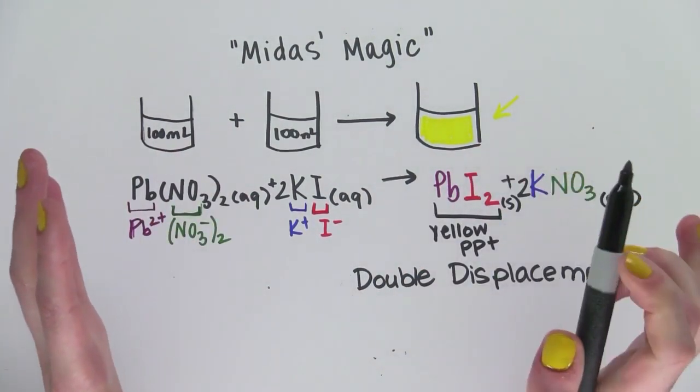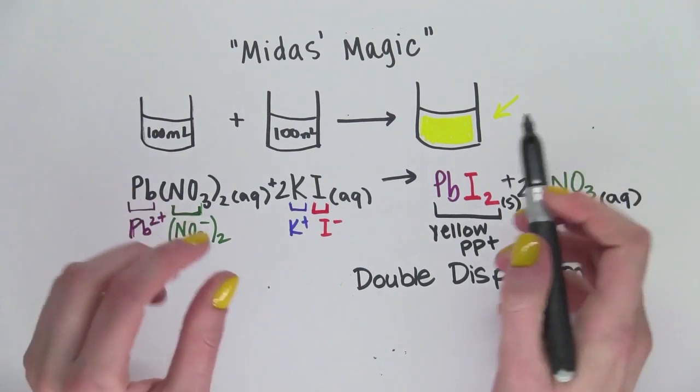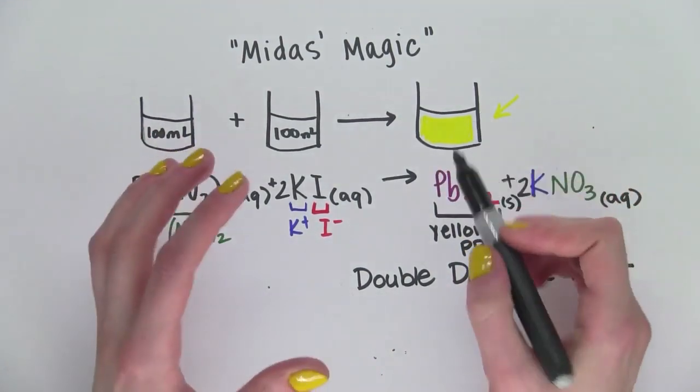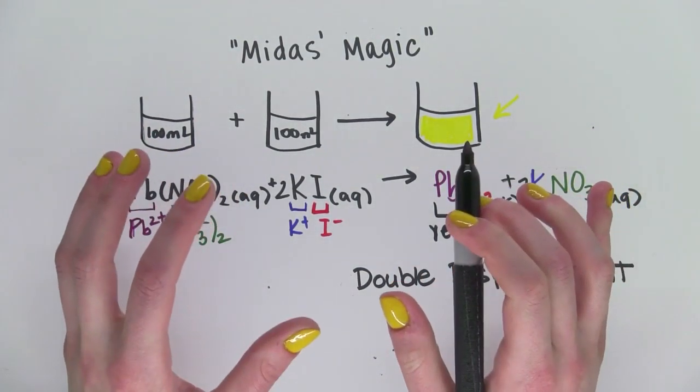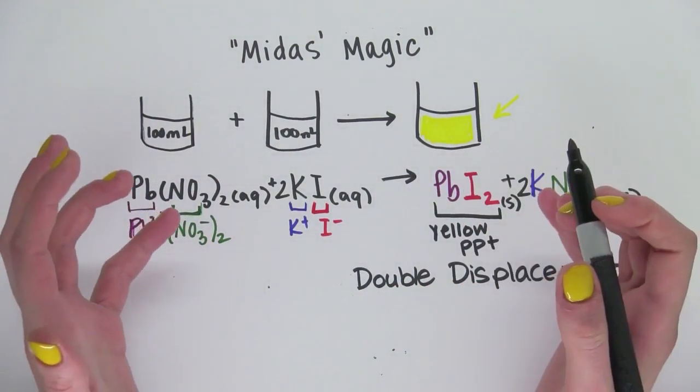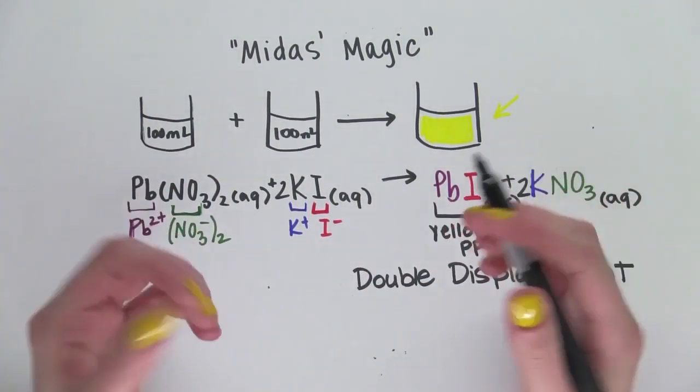And even though I didn't paint my nails with this particular pigment, lead iodide, creating nail polish colors is one of the many different things that chemists can do. So there we go. I hope you enjoyed Midas's magic and I will see you next time.